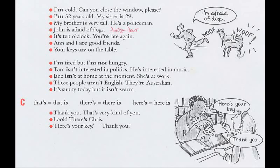C. Contractions: That's / That is. There's / There is. Here's / Here is. Example sentences: Thank you — that's very kind of you. Look, there's Chris. Here's your key. Thank you.